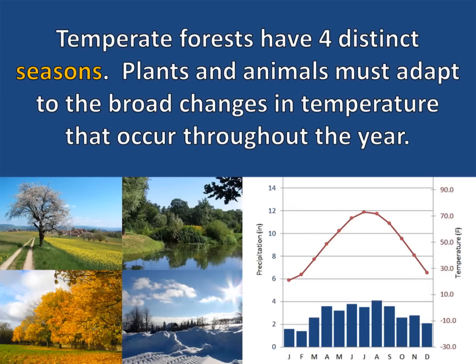Temperate forests have four distinct seasons. Plants and animals must adapt to the broad changes in temperature that occur throughout the year. During spring and summer, temperatures are warmer and water is more plentiful. But during fall and winter, temperatures are lower and can even drop below freezing, and water can be harder to come by.